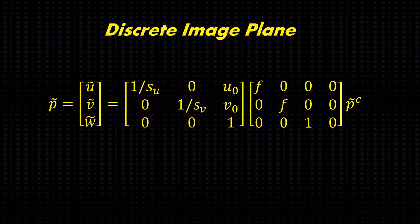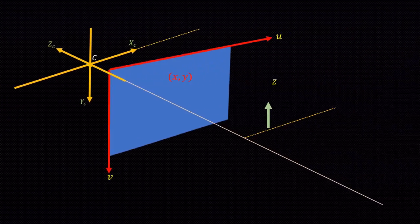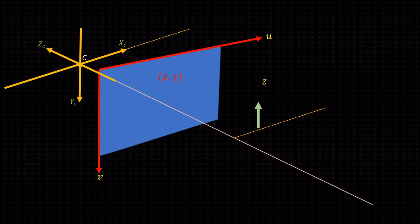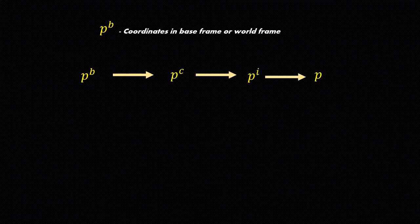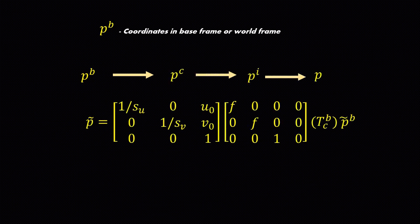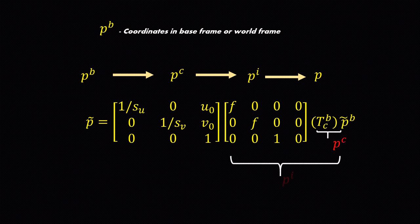Homogeneous pixel coordinates are related to the camera coordinates as described. Homogeneous pixel coordinates and pixel coordinates are related as u is equal to u tilde by w tilde, v is equal to v tilde by w tilde. Now what if the coordinates are represented in world frame or base frame? We have to convert that into camera frame and then to pixel coordinates. World frame is converted to camera coordinates with the help of a transformation matrix from base frame to camera frame. It is a 4 by 4 matrix.